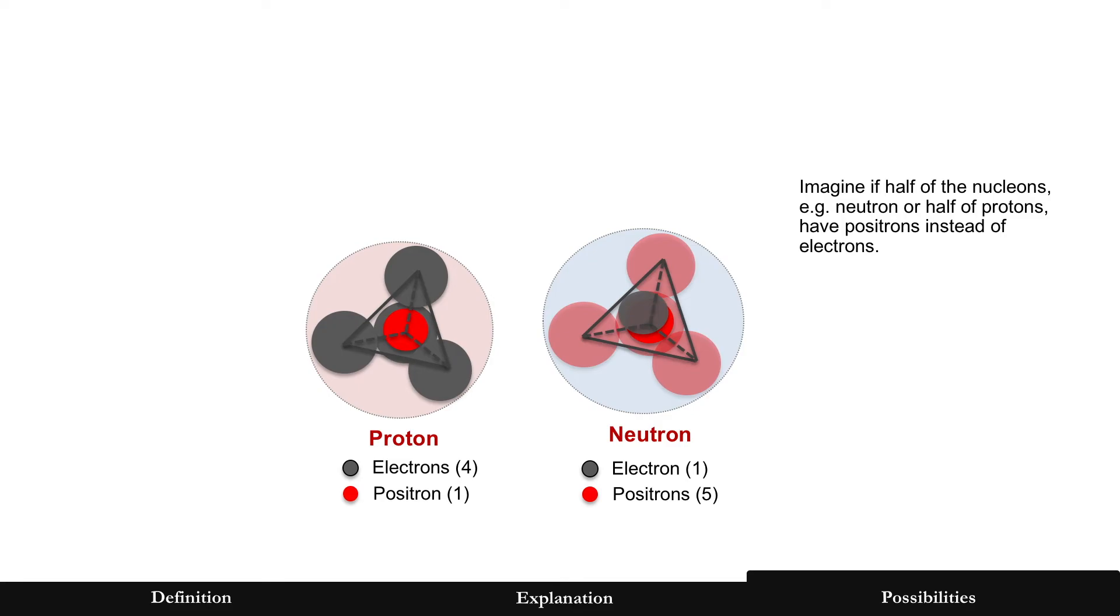Now, also in that explanation and video, a neutron has a positron and an electron in the middle. But now let's make one slight tweak to that video and that explanation of the neutron. And it could be the neutron or it could be half the protons that we have out there. It doesn't matter. Let's assume that